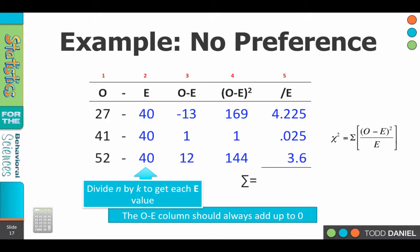The chi-square test is the sum of all of the O minus E squared divided by E values. We now have O minus E squared divided by E in a column. So our last step is, let's add them up. 4.225 plus 0.025 plus 3.6 adds up to 7.85. That is the chi-square for these data.